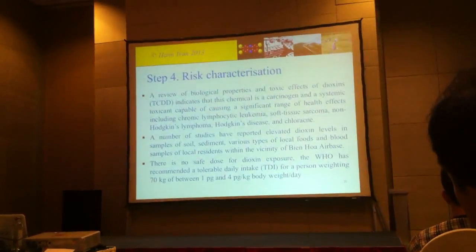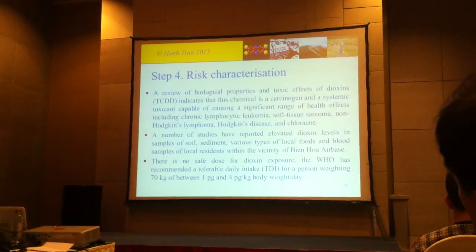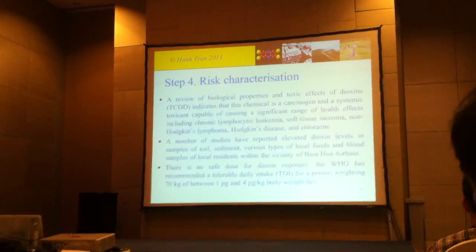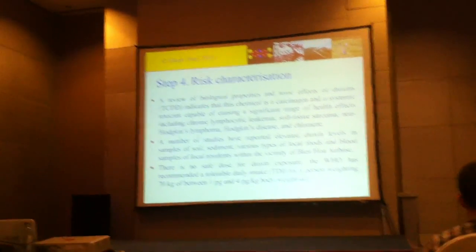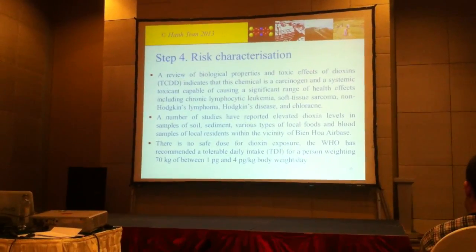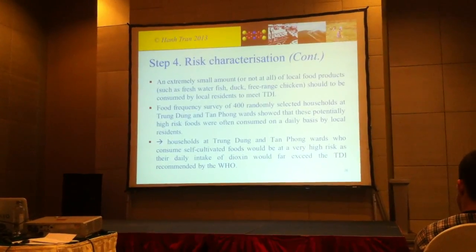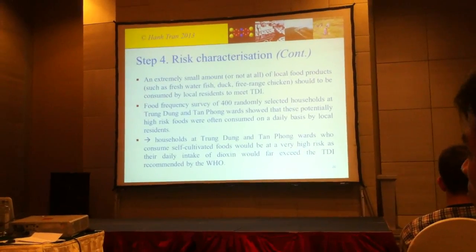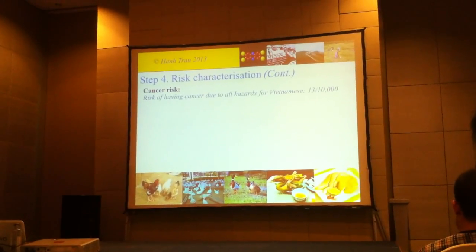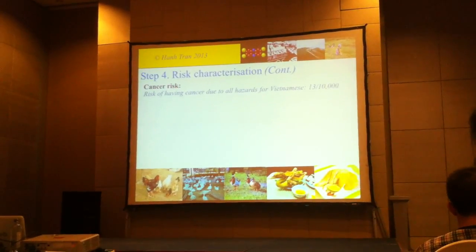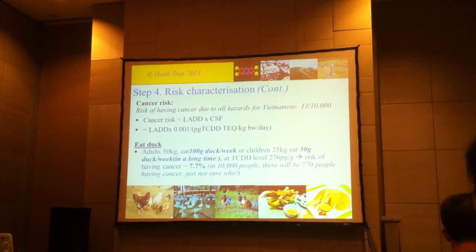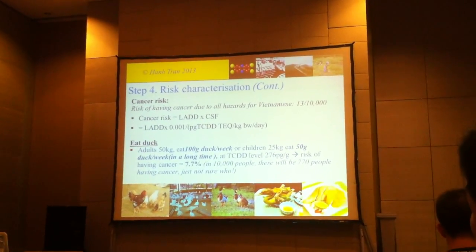For risk characterization, we summarize information already described in the first three steps. These are some of the key pieces of information for risk characterization. I will show you some of the calculations. For cancer risk, I calculate a simple point estimate using a standard formula. You don't need to worry about the formula, but you can see the interpretation of the results.